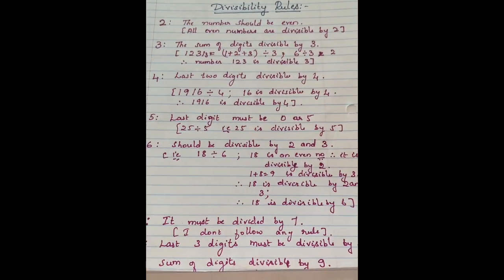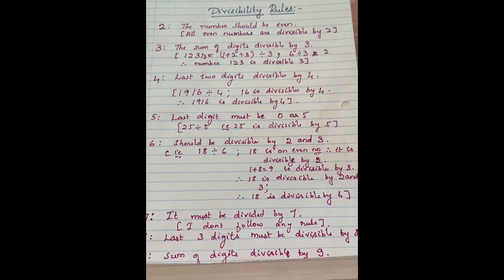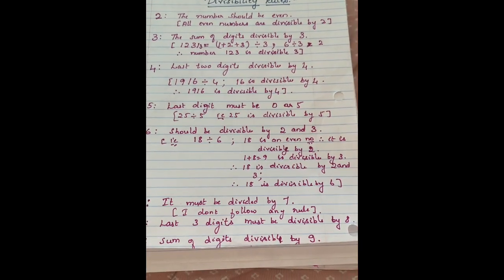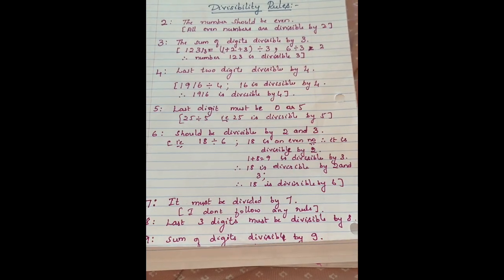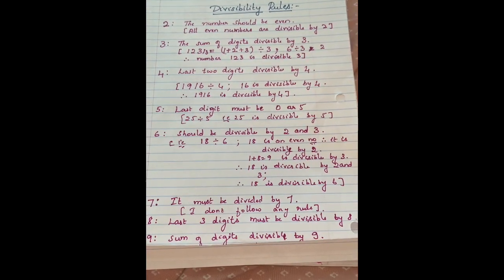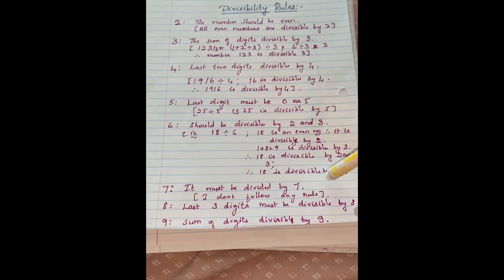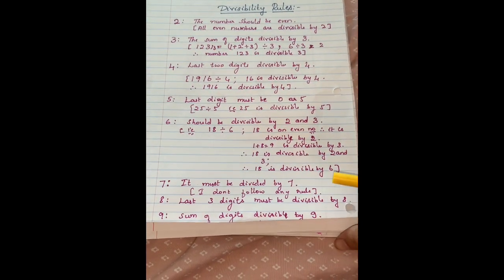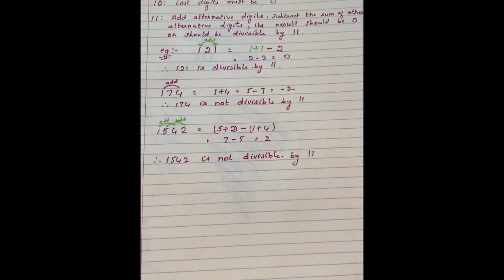Let's move on to divisibility rules. For 2, the number should be even. For 3, the sum of digits must be divisible by 3. For 4, last two digits must be divisible by 4. For 5, last digit must be 0 or 5. For 6, should be divisible by 2 and 3. For 7, I don't follow any rule. For 8, last three digits must be divisible by 8.